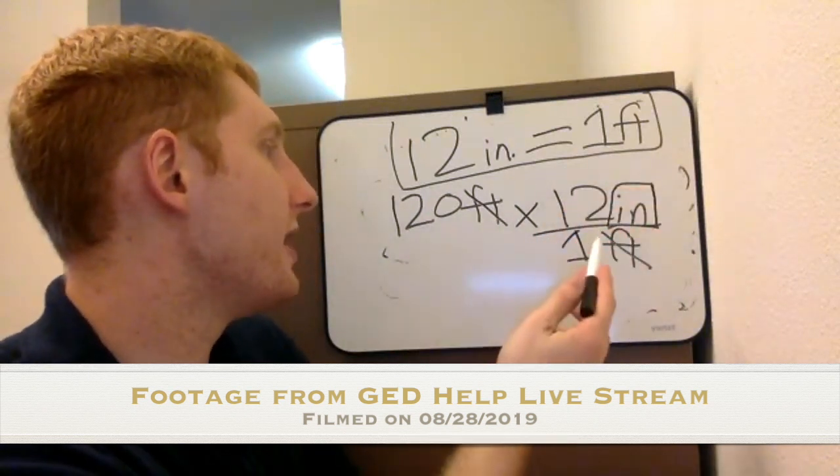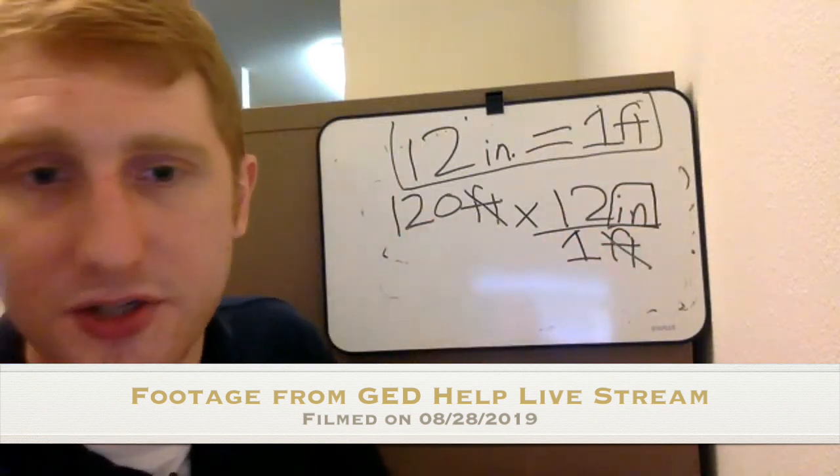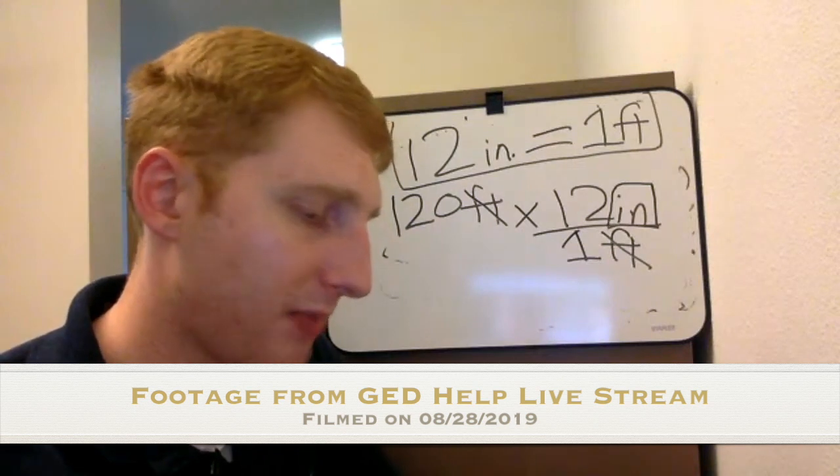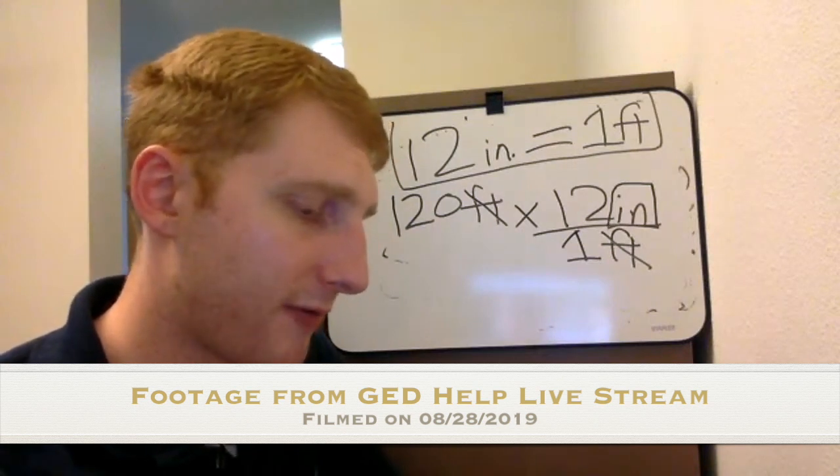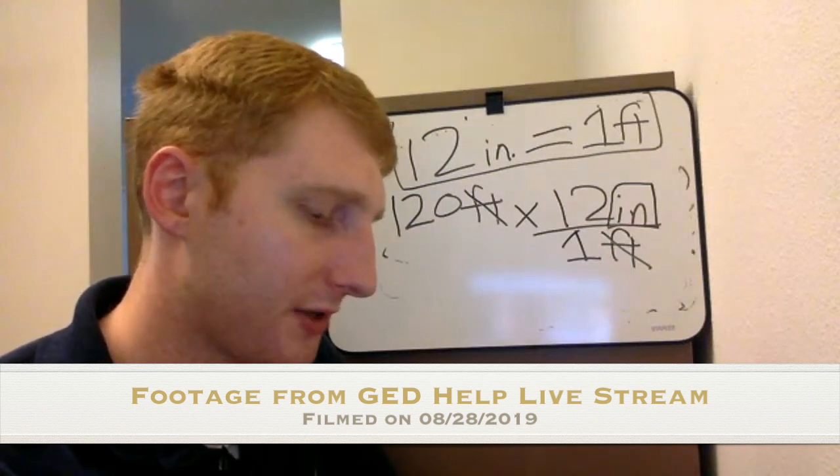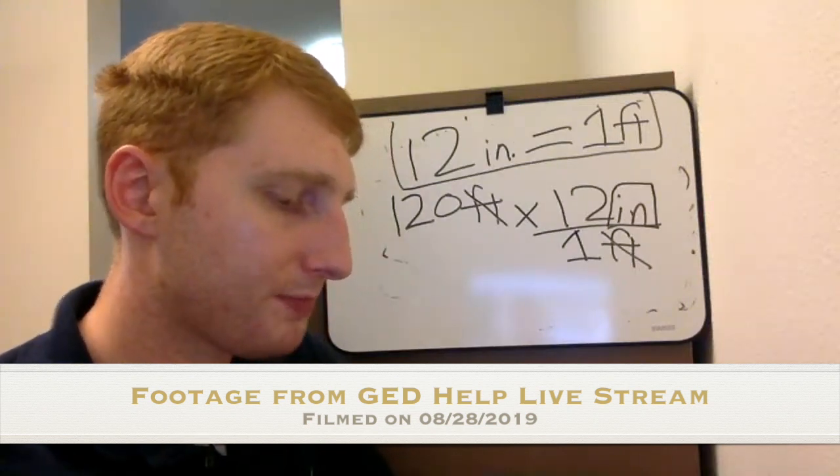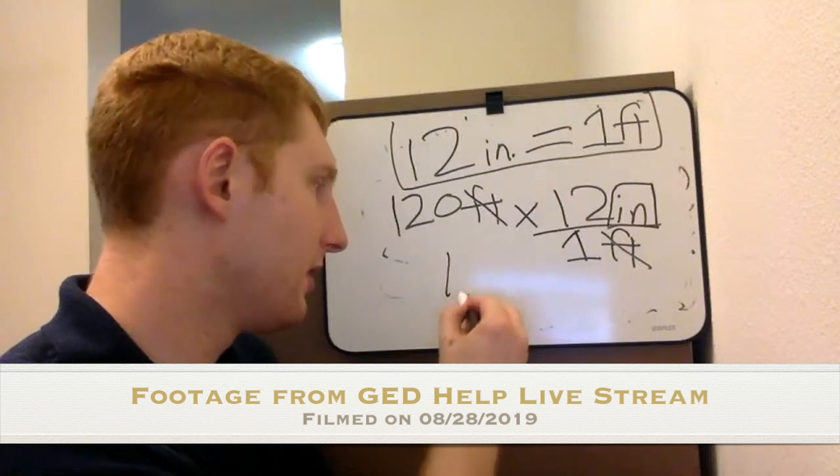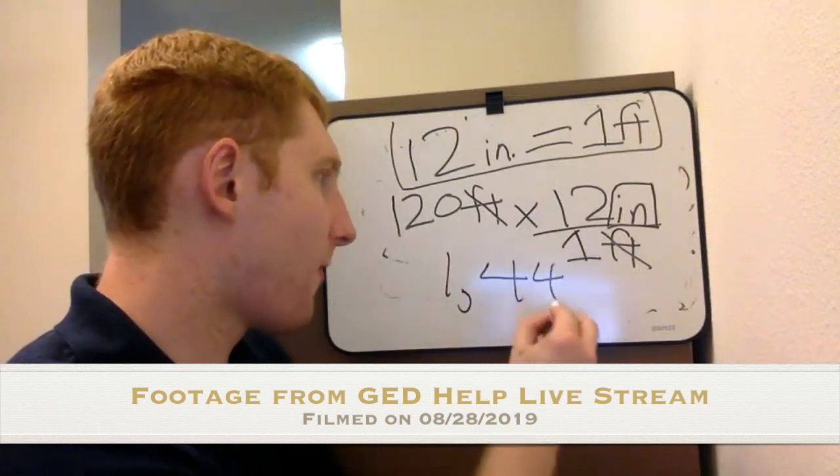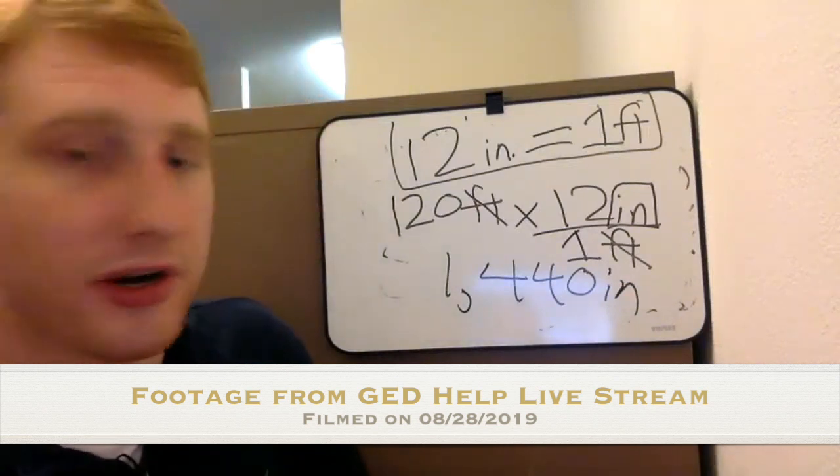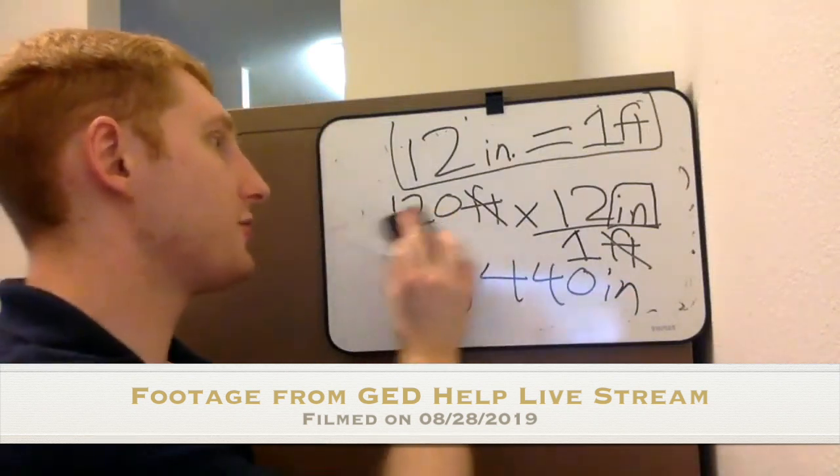So what I would do then is I would do 120 times 12. I would have to do that on my calculator here because we could also write it out by hand, but we don't want to take forever to do that. Let me pull up my calculator here on my phone. So we do 120 times 12. That's 1,440 inches. So that would be the answer. You're multiplying 120 by 12.